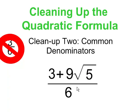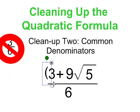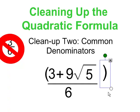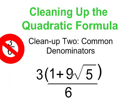You'll notice that 3 divides into each of these terms. So let's reduce this quadratic formula result so that it's fully simplified. There's a 3 in both terms in the top, so we're going to factor out a 3 from both of those terms. 3 divided by 3 is 1, and 9 divided by 3 is 3, so I can factor a 3 out of that term as well.